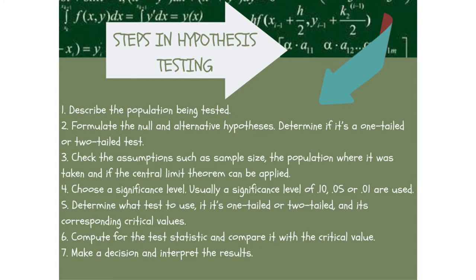These are the steps in hypothesis testing. First, you need to describe the population being tested. Second, formulate the null and alternative hypothesis, and determine if it's a one-tailed or a two-tailed test. Third, check the assumptions such as sample size, the population where it was taken, and if the central limit theorem can be applied. Fourth, choose a significance level — usually 0.10, 0.05, or 0.01 are used.